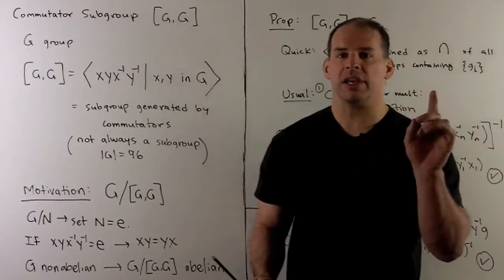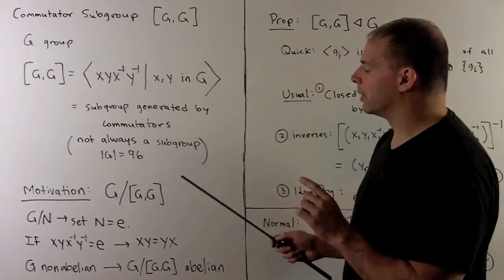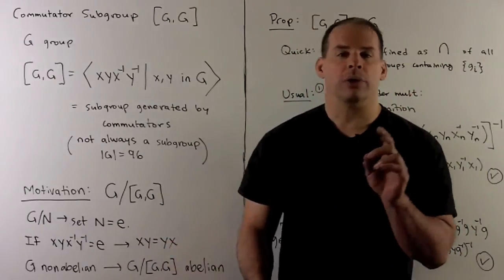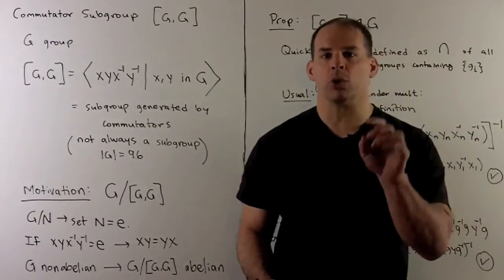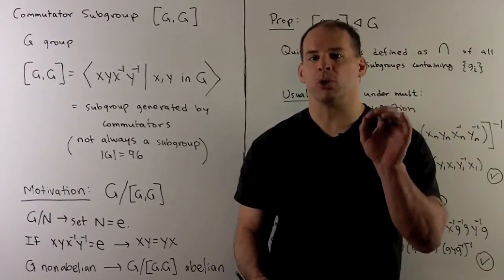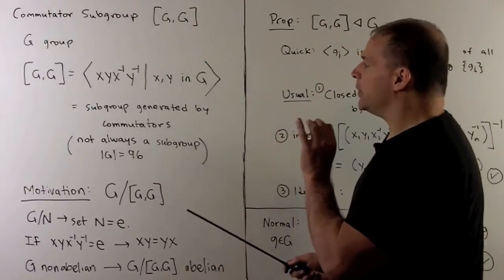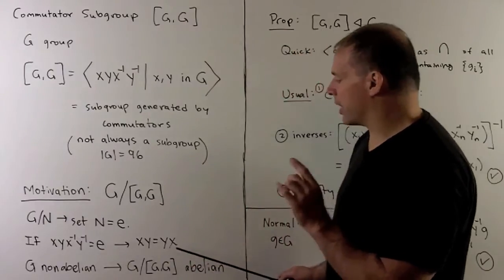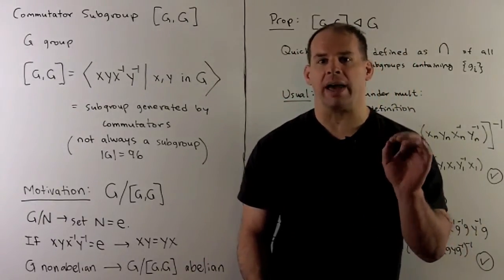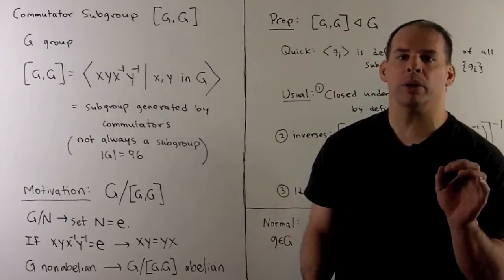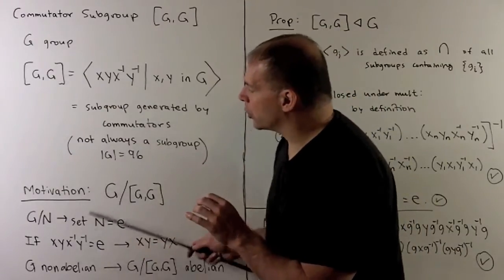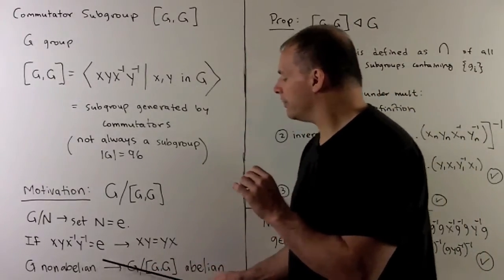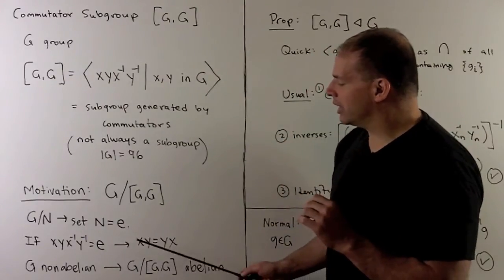What's the motivation here? I want to consider G mod the commutator subgroup. When we form a quotient group, the identity element is just your normal subgroup, so you're setting your normal subgroup N to the identity. If we take each commutator and set it equal to the identity, we can push x inverse y inverse to the other side, giving the relation XY equals YX. Considering that for all x and y, we're turning our quotient group into an abelian group — a recipe for turning a non-abelian G into an abelian group by considering the quotient G mod the commutator of G.